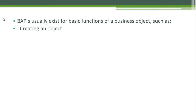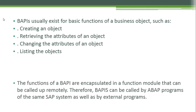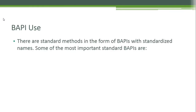BAPIs usually exist for basic functions of a business object, such as creating an object, retrieving the attributes of an object, changing the attributes of an object, and listing the objects. The functions of a BAPI are encapsulated in a function module that can be called remotely. Therefore, BAPIs can be called by programs of the same SAP system as well as by external programs.